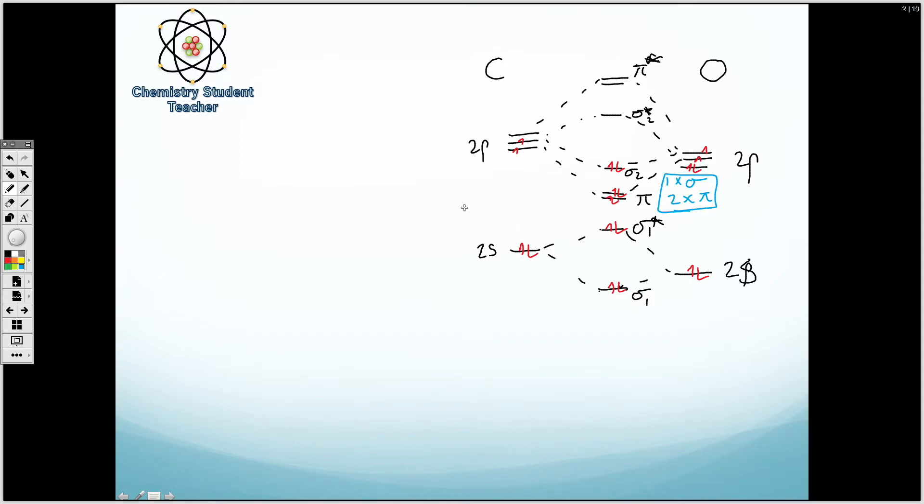We can use this to come up with a structure for carbon monoxide. So CO, let's draw it out like this. As we've got one sigma coming from mainly the p orbitals, we can have a sigma overlap of some of the p orbitals.